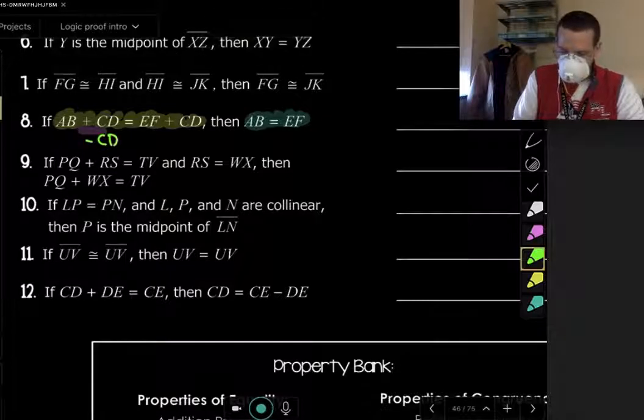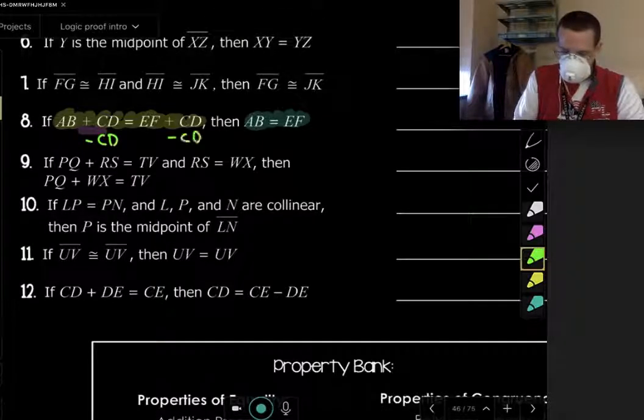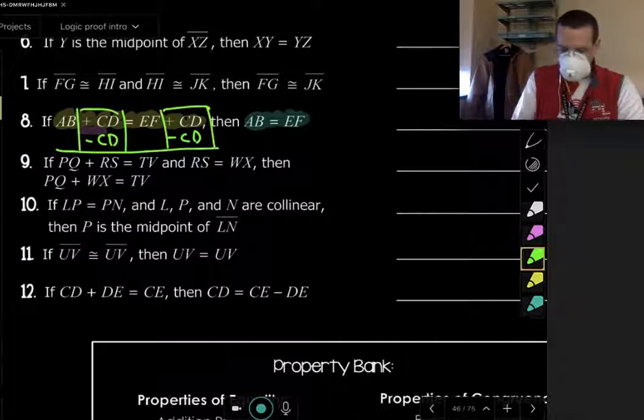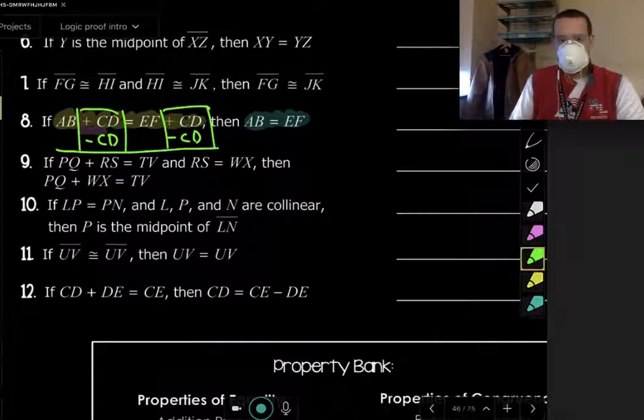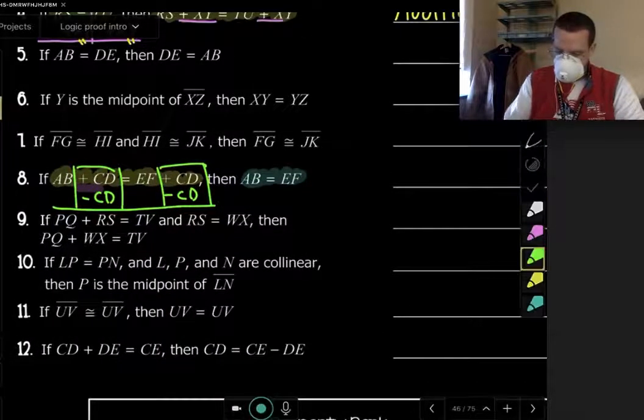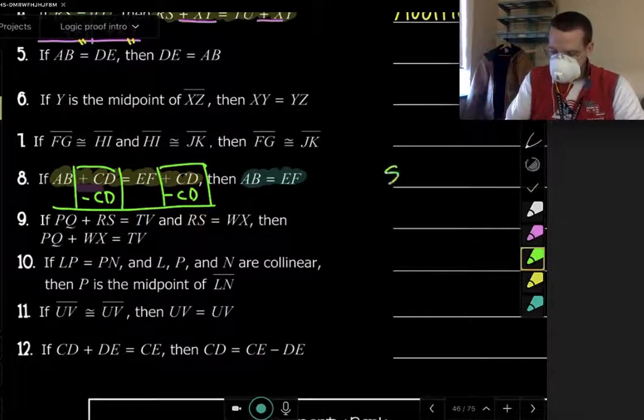How could we possibly do that? Well, we could subtract it from both sides. Then these two would cancel. And then we'd be left with just AB and EF. AB is equal to EF. And, again, this is the subtraction property.